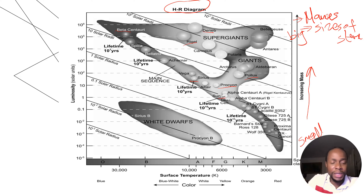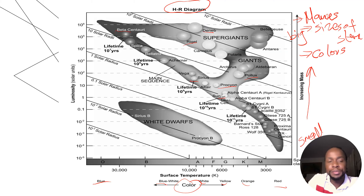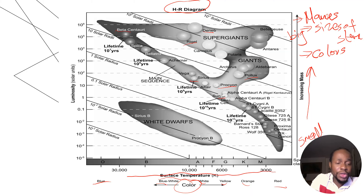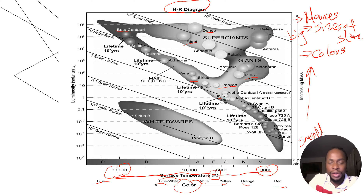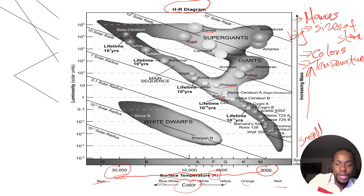This page also tells you about the colors of stars. If you look at the bottom on the x-axis, you can see red, orange, yellow, white, blue-white, and then blue. Still on the x-axis, you have surface temperature, and notice that temperature is increasing to the left — all the way from 3,000 up to 30,000 — and the unit for temperature here is Kelvin. So this page also provides you with the temperatures of stars.